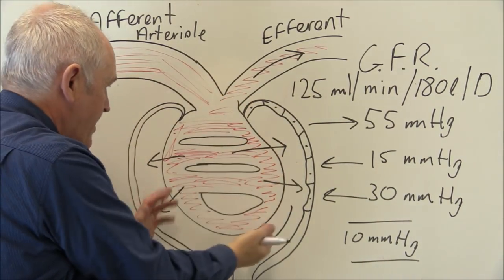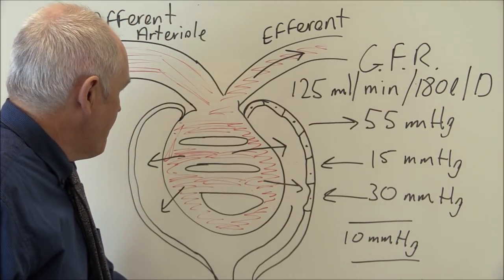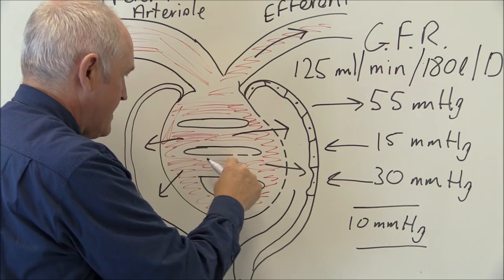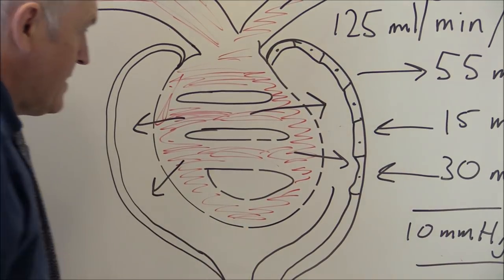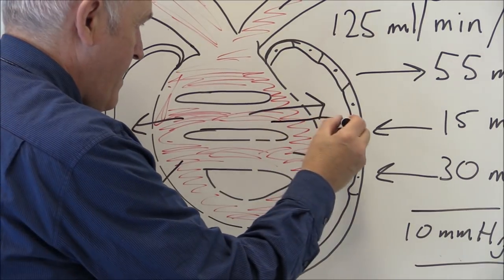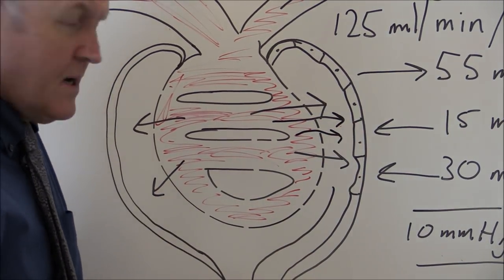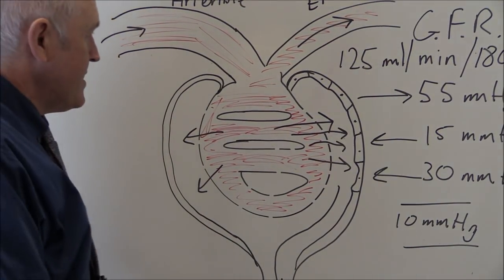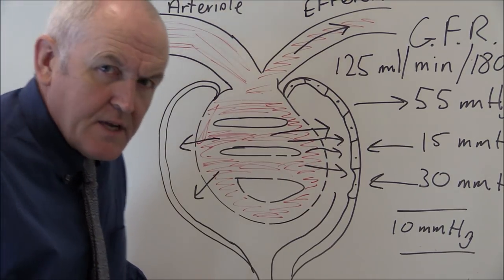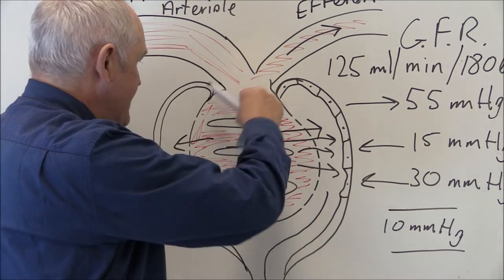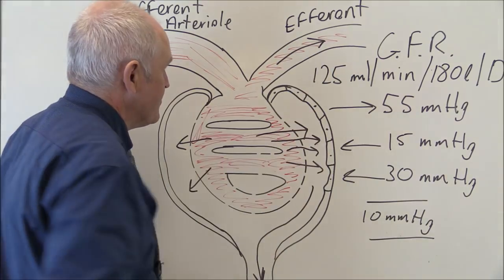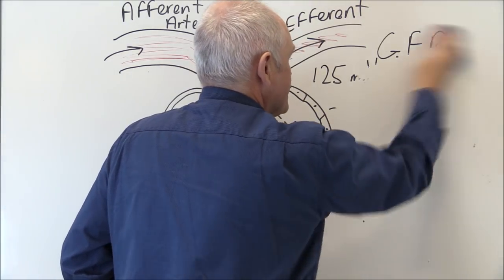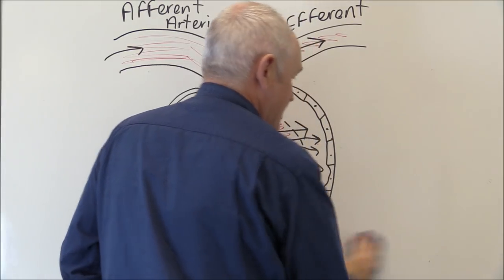This glomerular filtration occurs via the process of ultrafiltration — it's almost as if there are lots of really small gaps in the capillaries, meaning that small molecules can fit through but larger molecules are retained in the plasma. Now let's think about some of the components of the blood and consider what enters the glomerular filtrate versus what is retained in the capillaries going into the efferent arteriole. The basis for filtration is primarily molecular size.